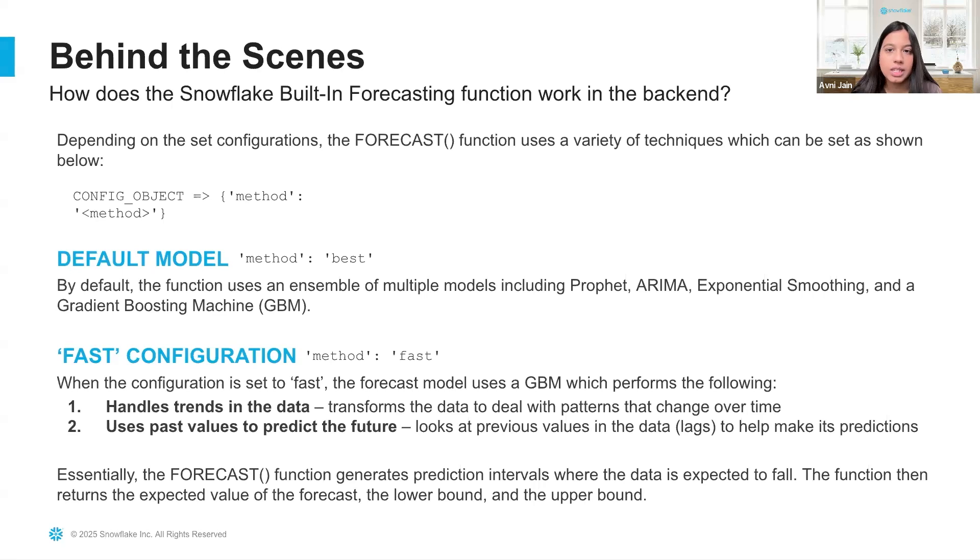You can also choose to set the configurations to fast which would be solely a gradient boosting machine to handle trends in the data and also use past values to help make predictions. The output of the forecast function will be the expected value of the forecast, the lower bound, and the upper bound so you kind of have a range of where you would expect the data to be, but also the actual value.